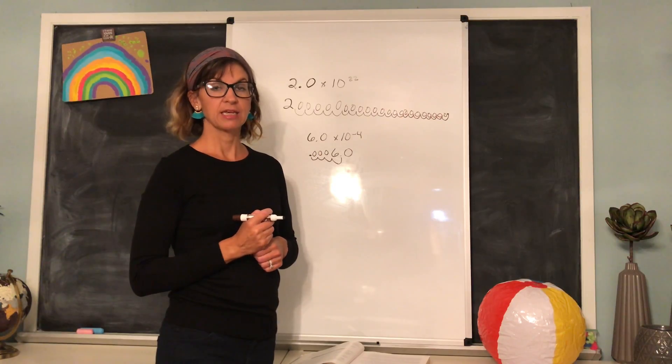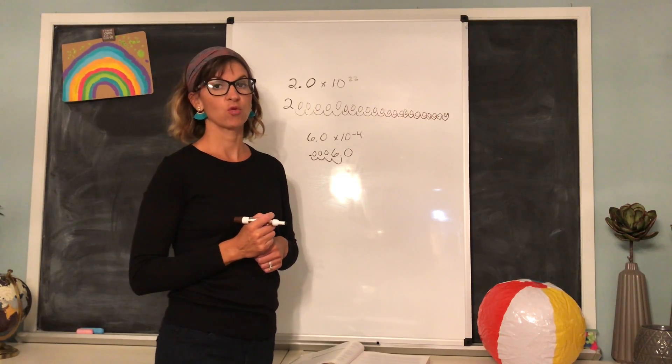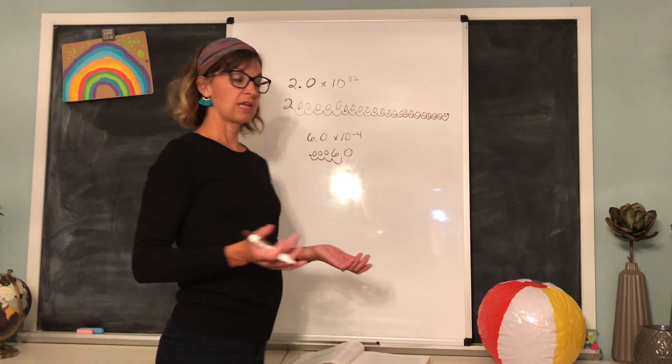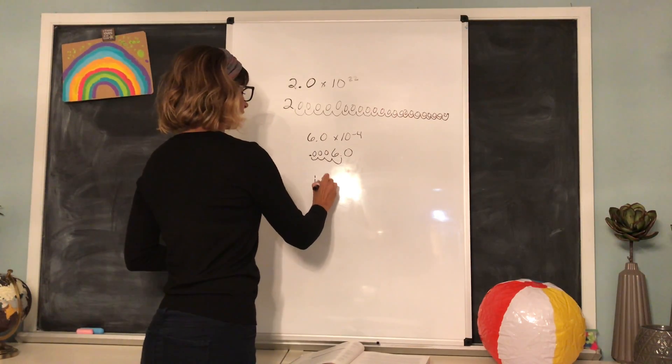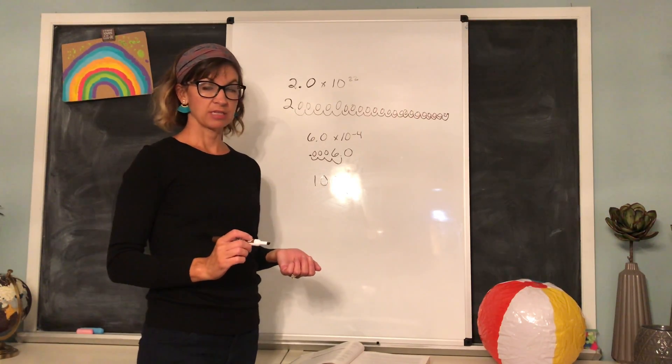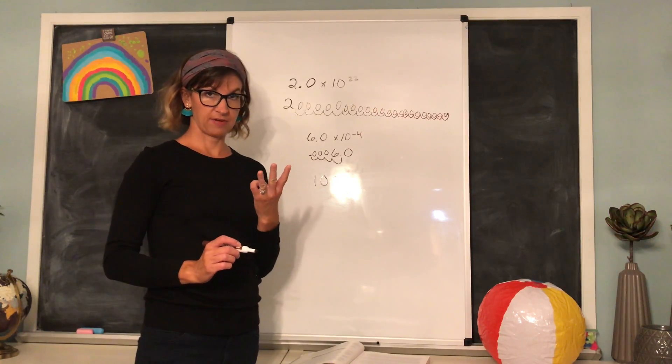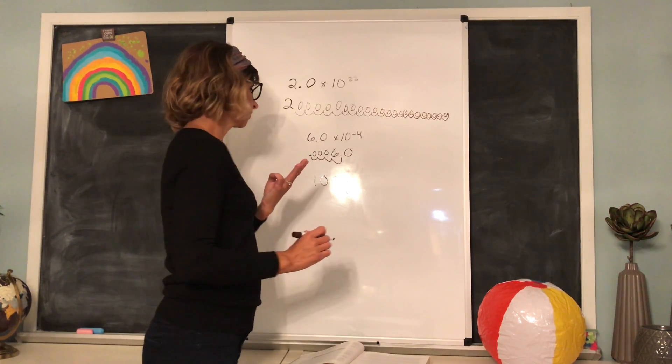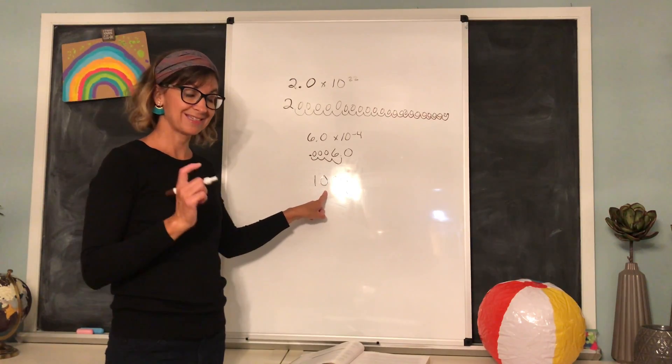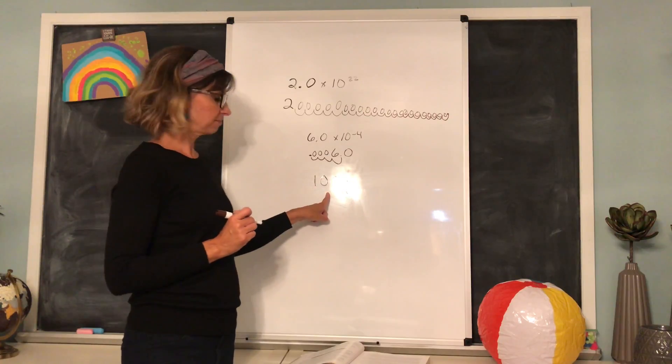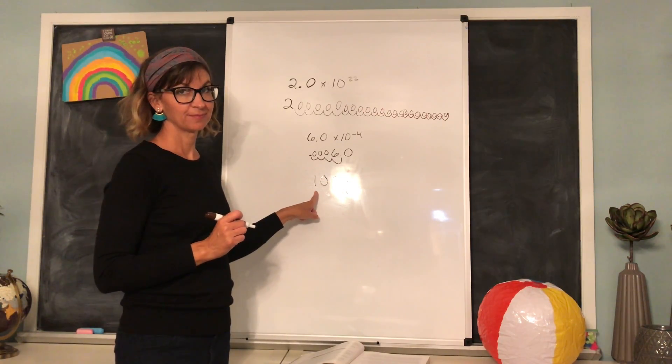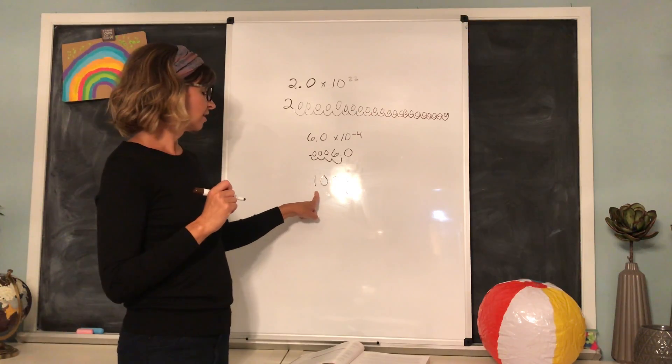The way we're going to use this in chemistry a lot is making sure that we have the correct number of significant figures in our answer. So if we have a calculation and our answer comes out to be 100 grams, but we also know that our answer was supposed to have 3 significant figures, this number here, 100 written this way, does not have 3 significant figures. How many does it have? Only 1.